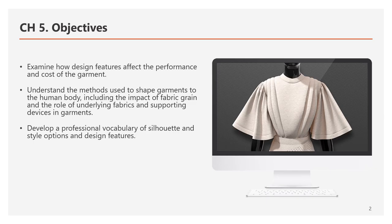The objectives of this chapter: first, to examine how design features affect the performance and cost of the garment you will design. You will also understand the methods used to shape a garment to the human body — designing on 2D fabric and making it 3D — including the impact of fabric grain and the role of underlying fabric and supporting devices in garments.